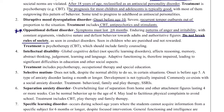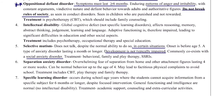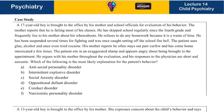Selective mutism: these children do not talk in certain situations only — for example, they talk fine at home but not at school. Their development is typically not impaired. Selective mutism often coexists with social anxiety disorder and separation anxiety disorder.